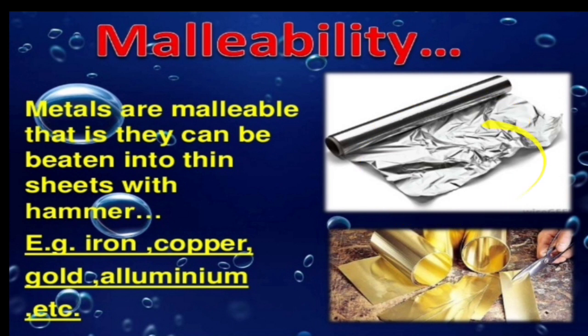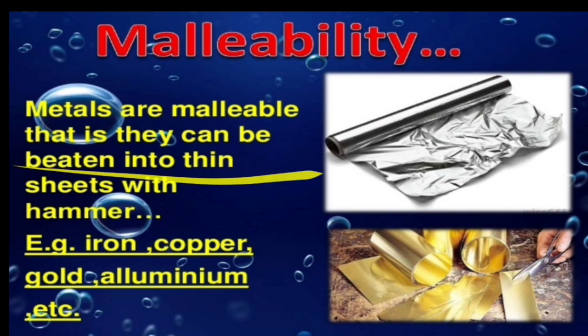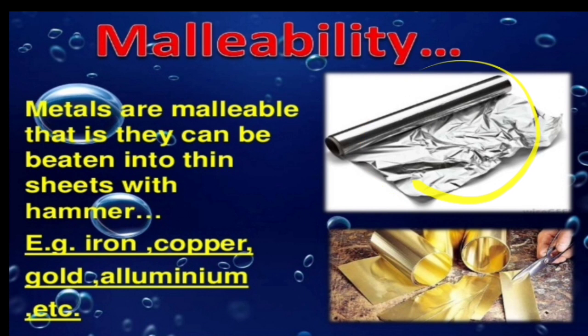The next very important property is malleability. Aluminium foil and gold foil are examples. Malleability means they can be beaten into thin sheets with a hammer. Whenever hammered, they come into the form of thin sheets. To summarize: thin wire is called ductility; thin sheets is called malleability. Examples: iron, copper, gold, aluminium, etc.